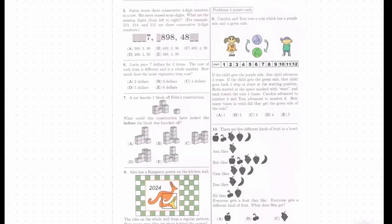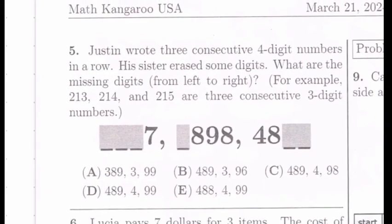We're on to page 2 of the 2024 Level 3-4 Math Kangaroo Test. Let's start with problem number 5. Justin wrote three consecutive 4-digit numbers in a row. His sister erased some digits. What are the missing digits from left to right? For example, 213, 214, and 215 are three consecutive 3-digit numbers.